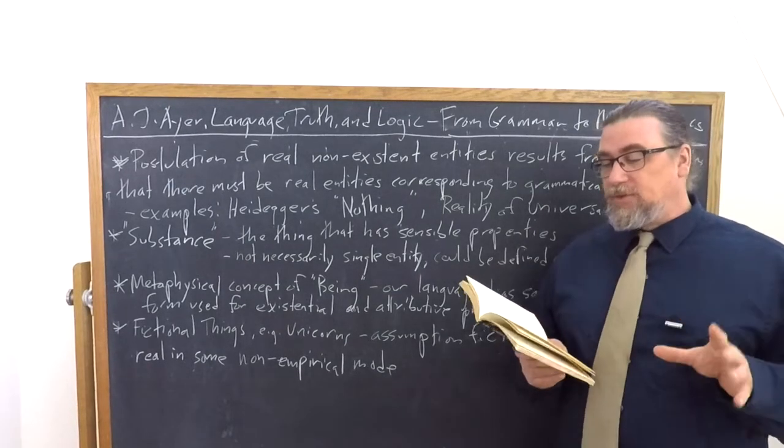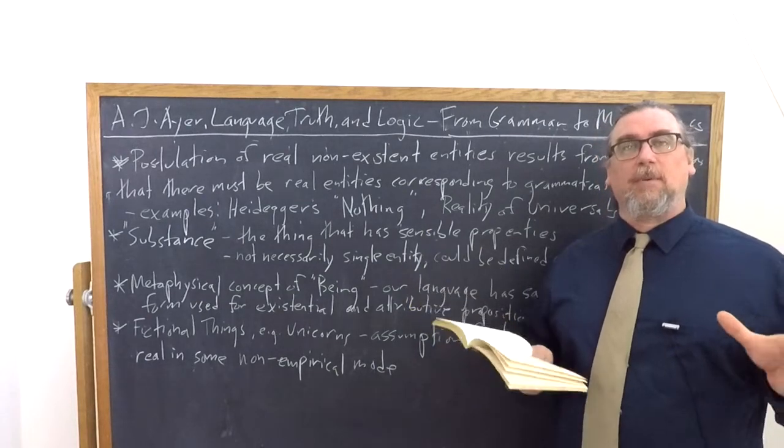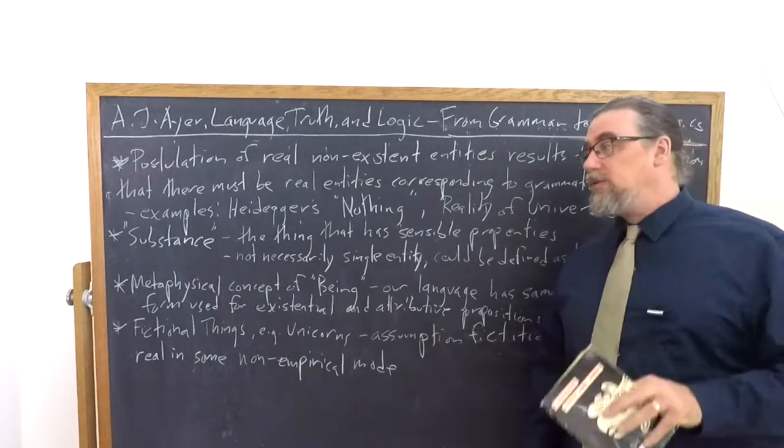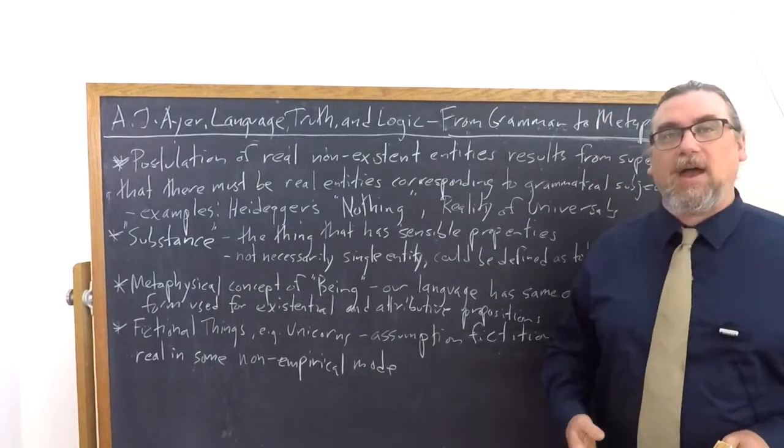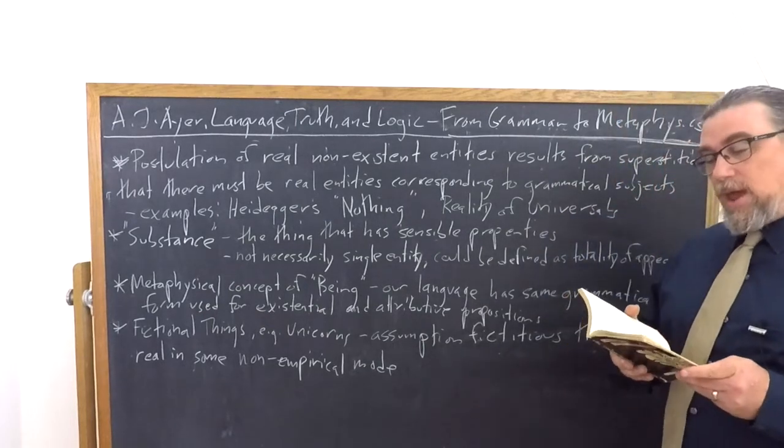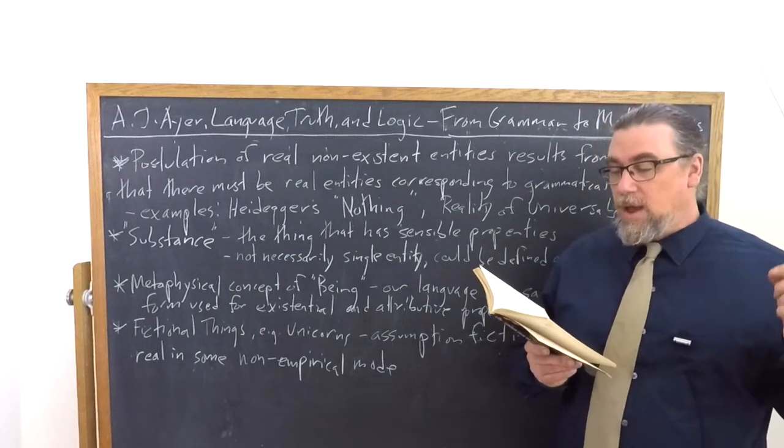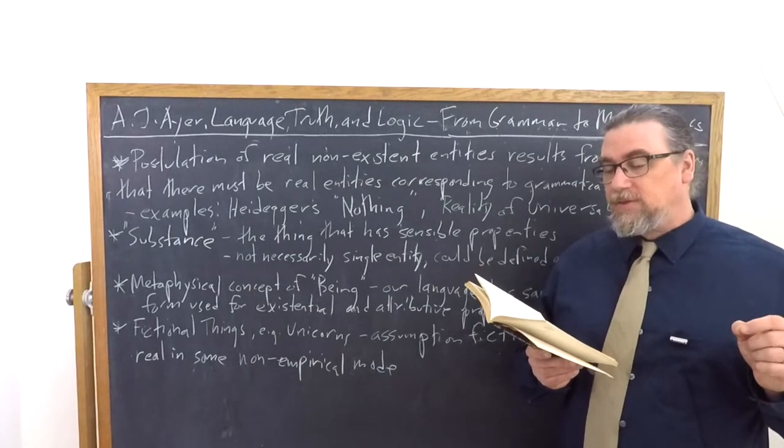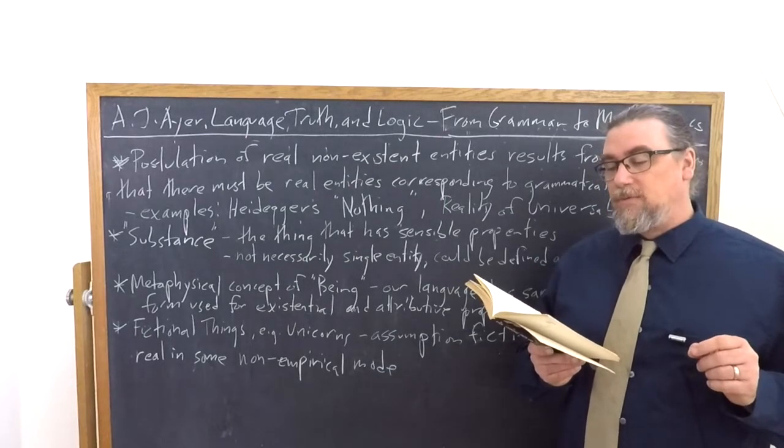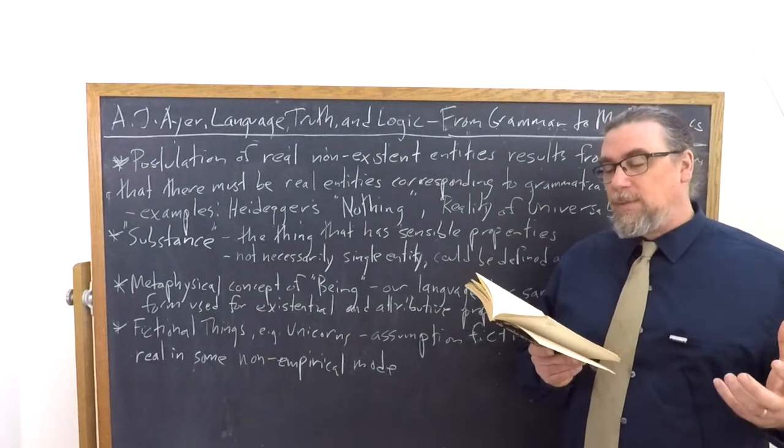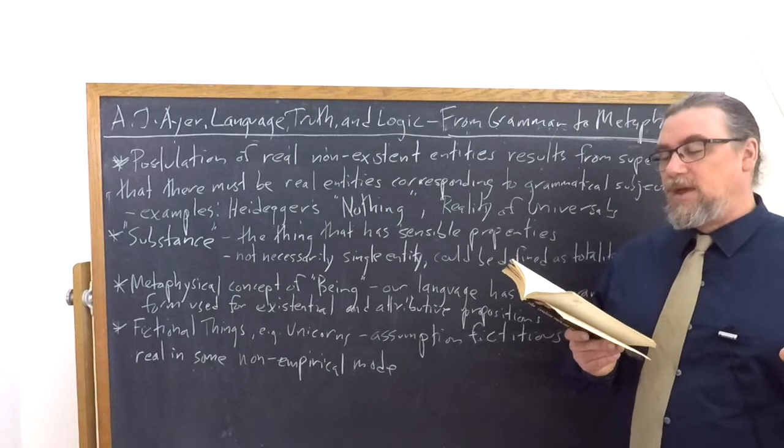He says we use the term substance to refer to the thing itself. We can do that in a generic sense and talk about substance. So like the substance of this or the substance of this chalkboard, the substance of my tie, the substance of my own flesh. And we can talk about each of those individual substances as well and what they are. He says we use the term substance to refer to the thing itself from the fact that we happen to employ a single word to refer to a thing and make that word the grammatical subject of the sentences in which we refer to the sensible appearances of the thing.